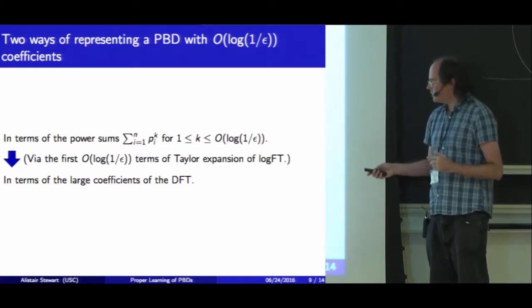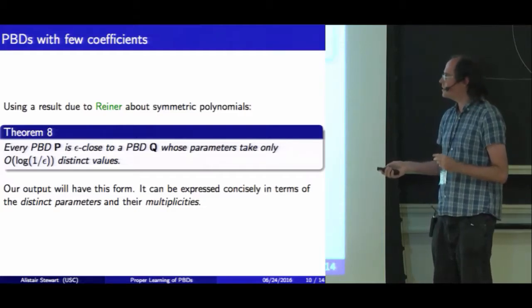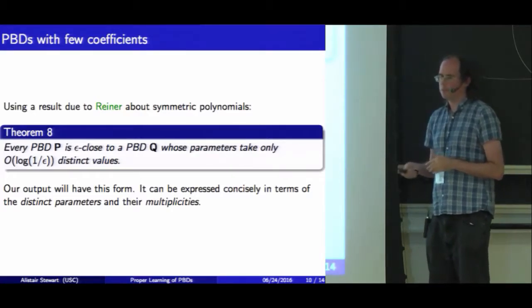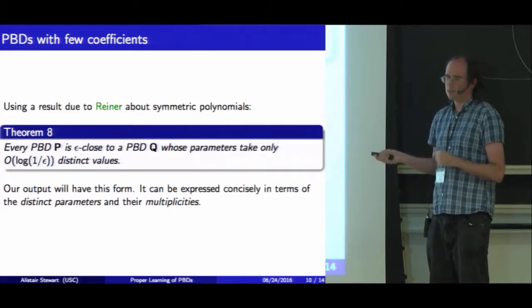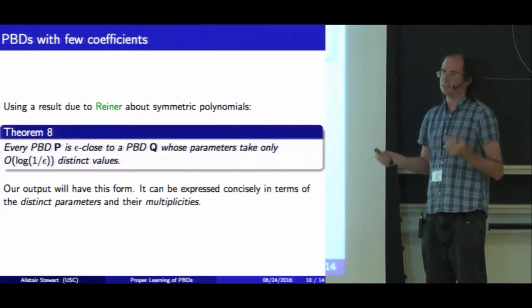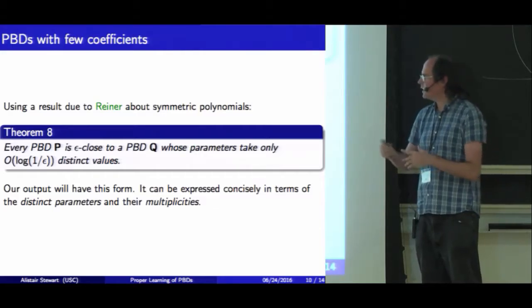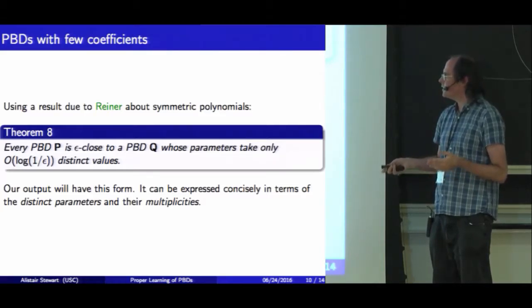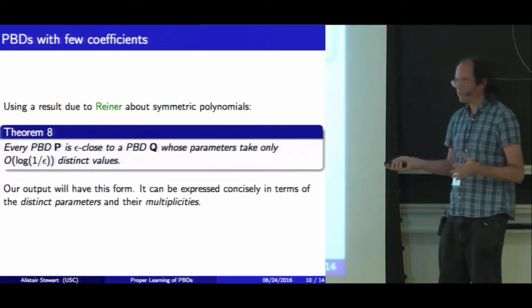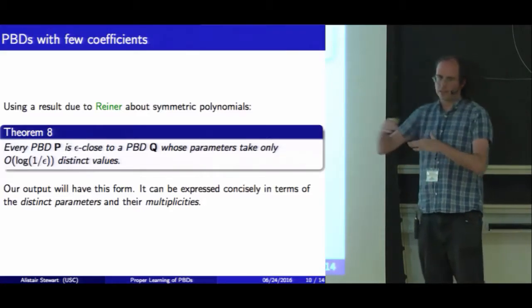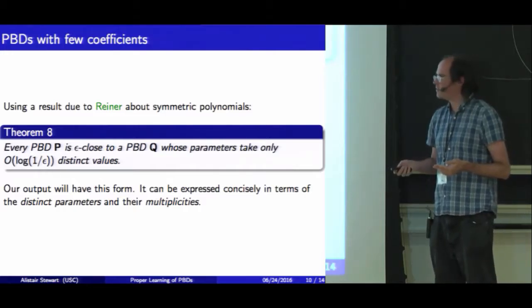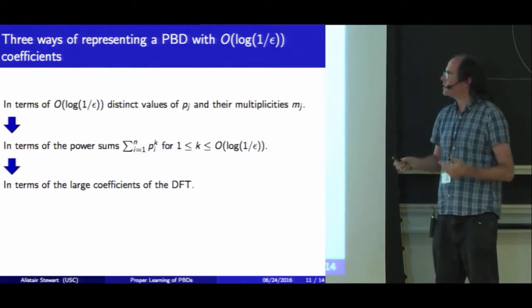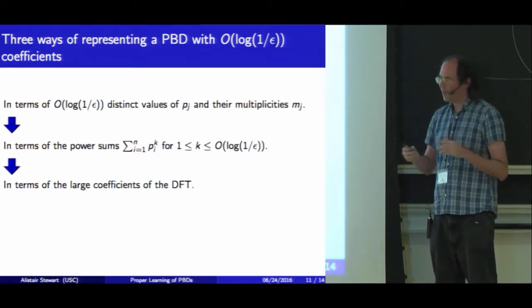This is a symmetric polynomial, and using some results in algebraic geometry, this has the interesting consequence that every Poisson binomial distribution is close to another Poisson binomial distribution where the parameters only have log(1/ε) distinct values. So we still have lots of parameters, but only log(1/ε) distinct values among them. Our output can be expressed concisely: we have log(1/ε) distinct parameter values, each with a multiplicity saying how many times it appears.